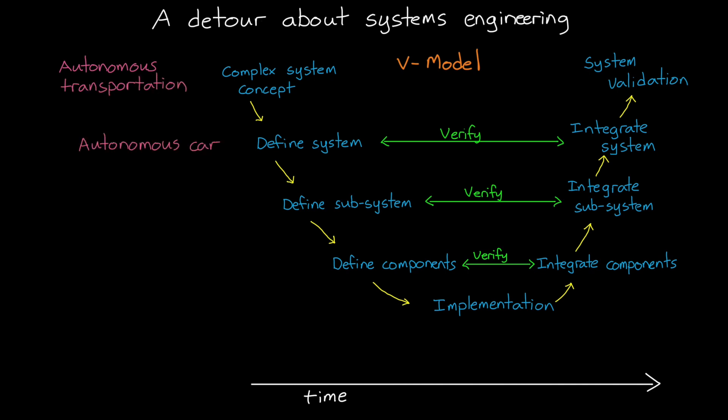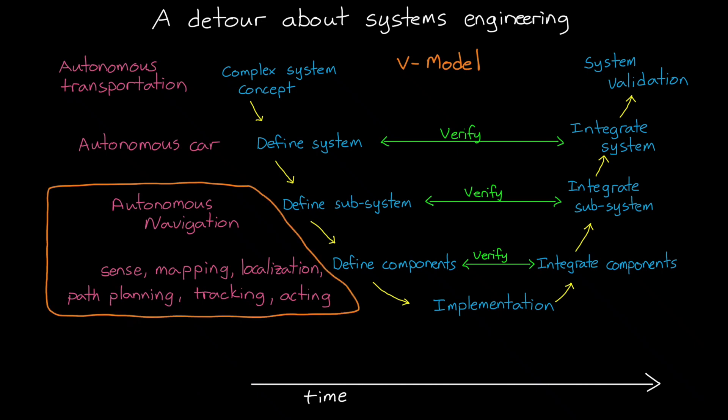But it directly applies to our autonomous navigation problem. Here the top level system might be an autonomous car, and autonomous navigation is one of many subsystems. And within autonomous navigation, we already know that we've broken it down into sense, mapping, localization, path planning, tracking, and acting. So, our job, currently as systems engineers, is to think about what we want the overall navigation system to do, and then specify what each of these capabilities need to accomplish in order for that to happen.